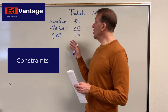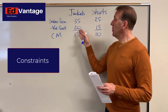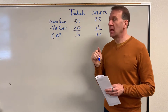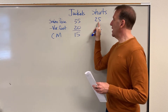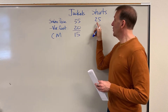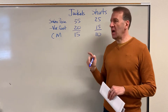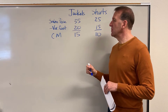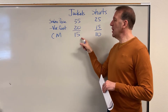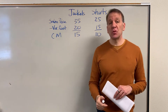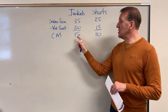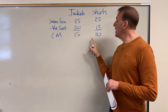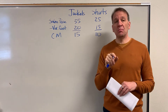On the board, you can see that I have jackets that I sell and shirts that I sell. The sales price for jackets is $35, for the shirts is $25. I also have my variable cost — $20 and $15 respectively. So now I can subtract my variable cost and get my contribution margin. My jackets have a contribution margin of $15 and my shirts have a contribution margin of $10.